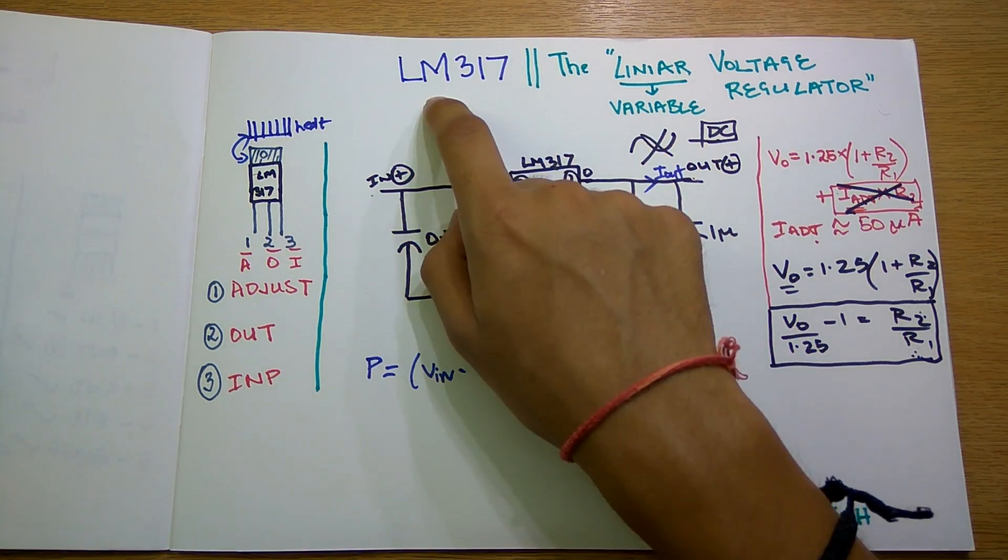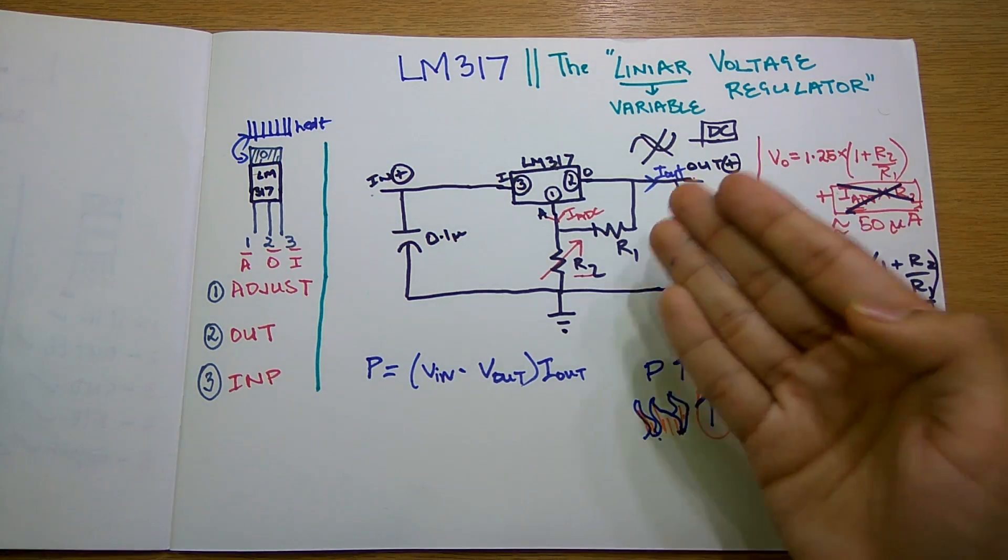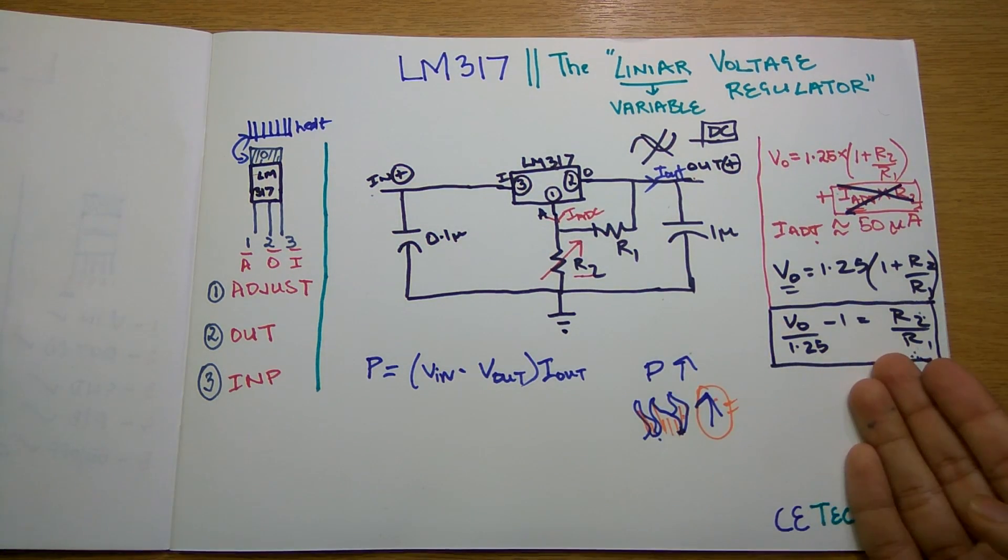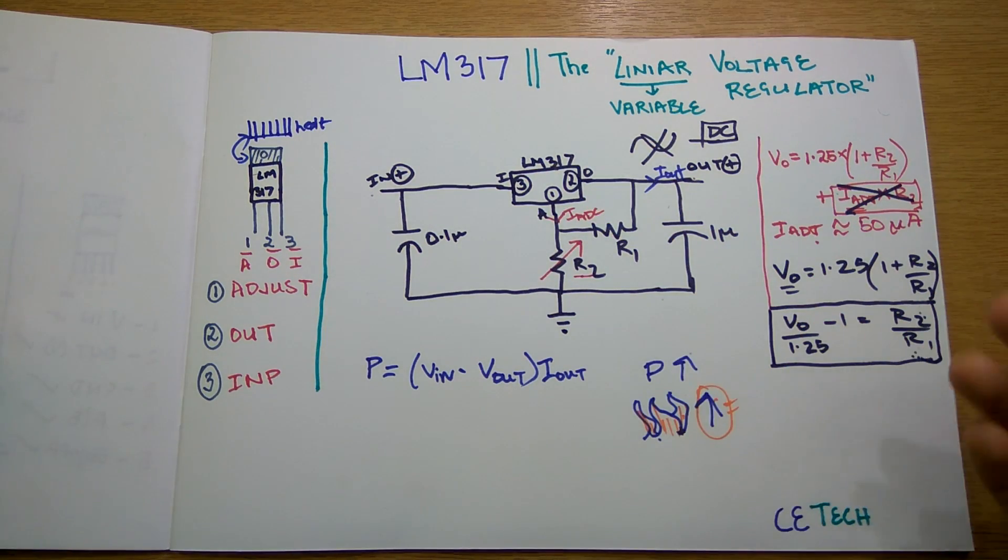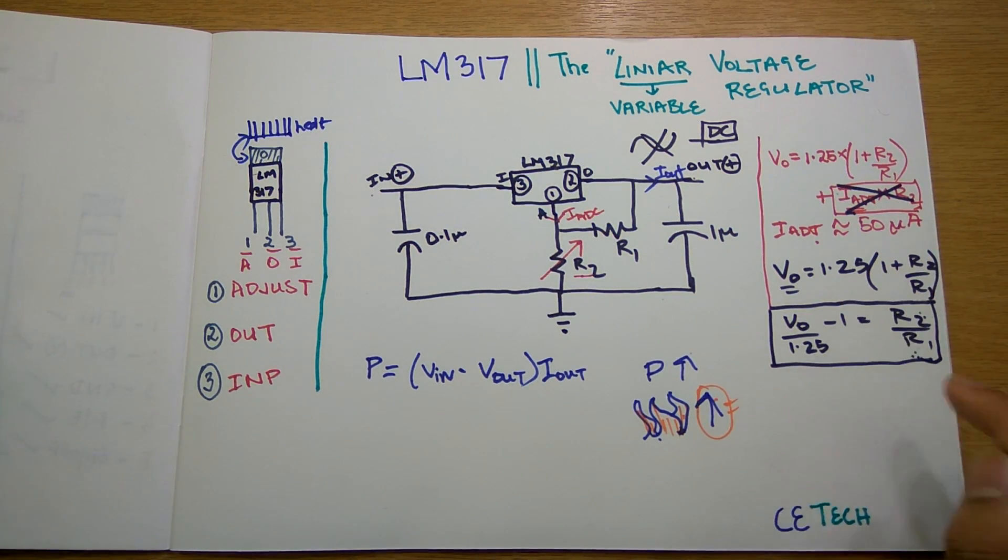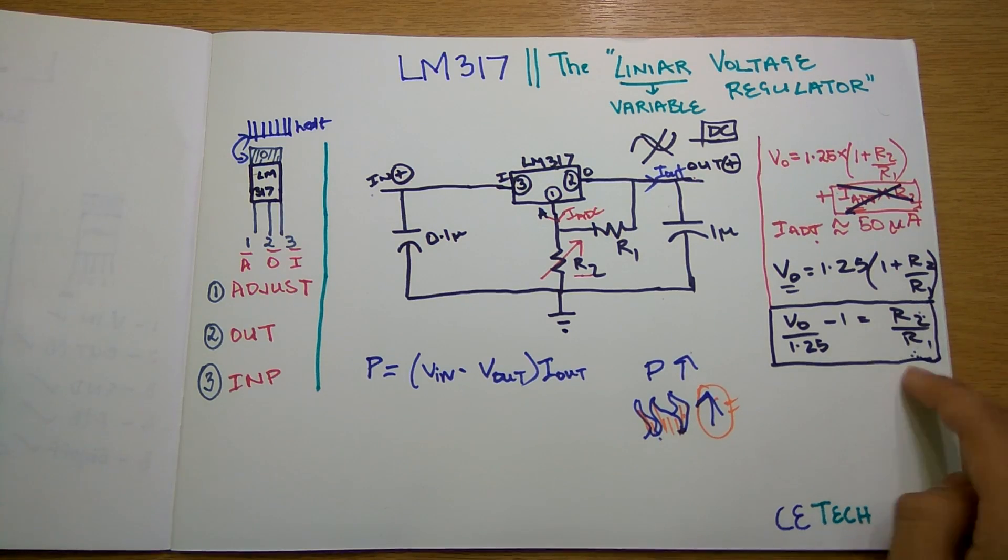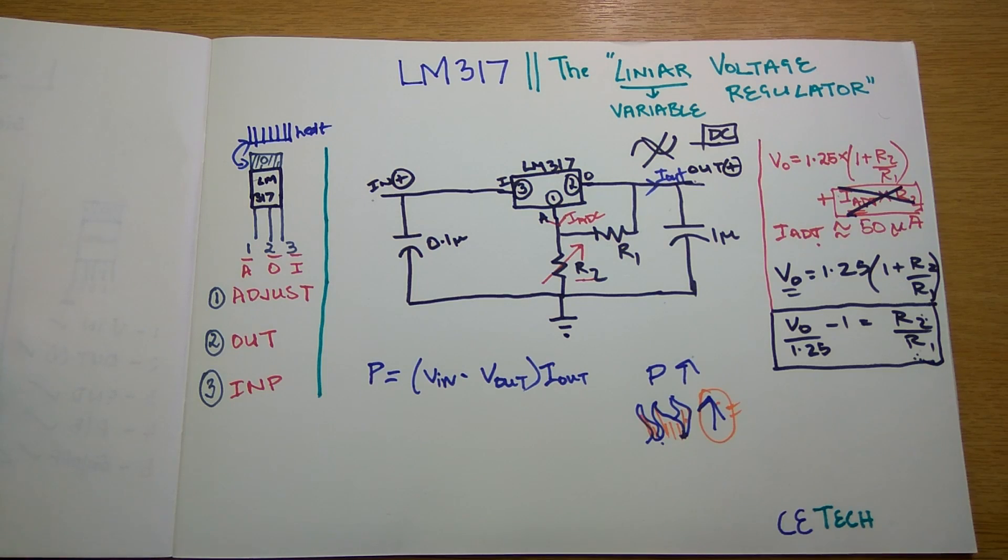This is how the LM317 works. This is the magic of LM317. You have the circuit diagram, you have the formula. Just apply it, use this circuit diagram, put in the Vout voltage if you want to make a fixed one, or keep R2 variable and R1 fixed and you are ready with a variable DC power supply.